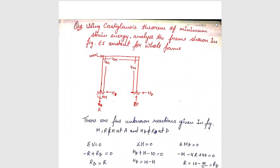Today we will discuss a topic from Theory of Structures which is Castigliano's Second Theorem based numericals. In the first question, the question says: using Castigliano's Theorem of Minimum Strain Energy, analyze the frame shown in the figure. EI is constant for the whole frame. Here we have a frame which we have to analyze.